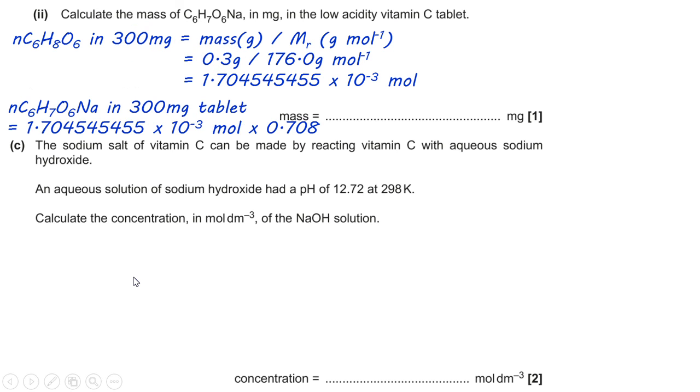So, that allows us to work out the number of moles of the salt, because the salt and the vitamin C are equimolar. And we need to be careful here, because if you remember, the ratio is 0.708 to 1. So, multiply the moles by 0.708.